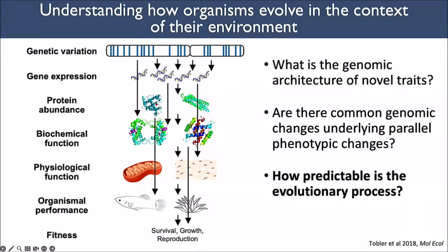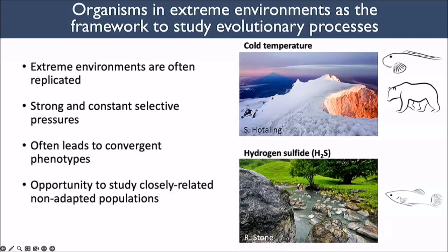I use extreme environments as a framework to study evolutionary processes, and the reason I shifted from human population genetics to organisms in wild extreme environments is that extreme environments are often replicated. There are also strong and constant selective pressures, so we can make predictions about how an organism and its genome may change in response to that extreme environment and test those predictions. We often see convergent phenotypes in extreme environments, especially in very disparate clades.